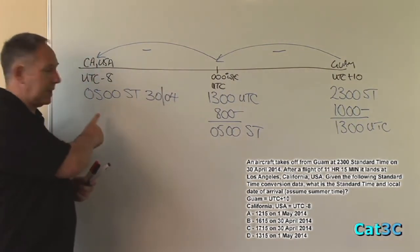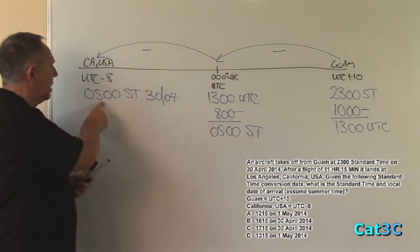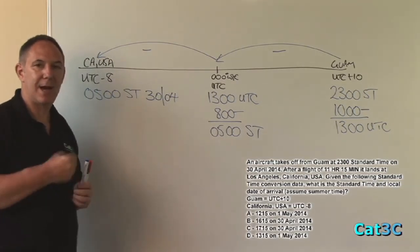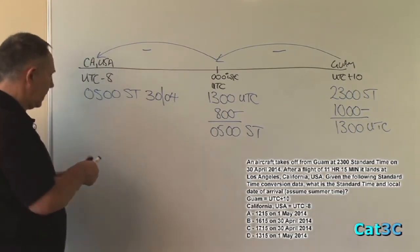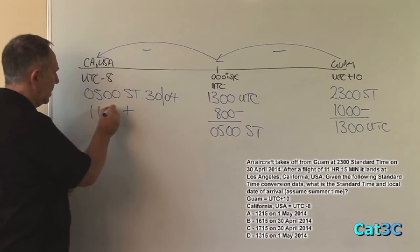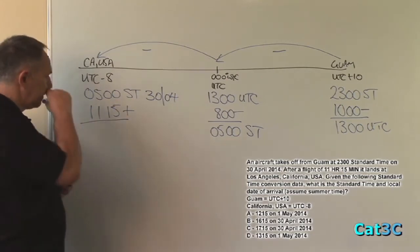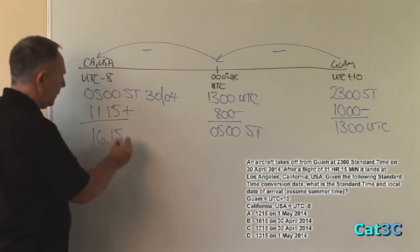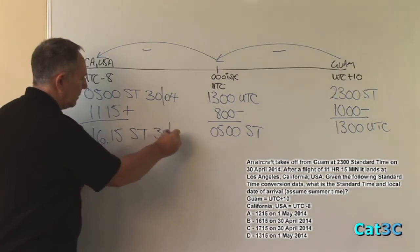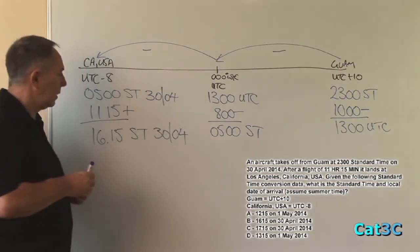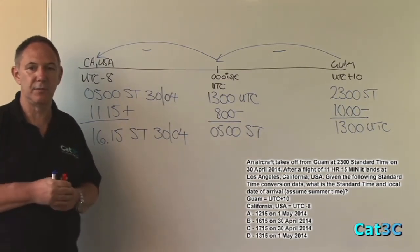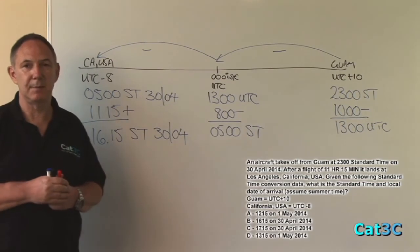However, what we must note is that this is the standard time at California, USA, when the aircraft took off from Guam. What we now have to do is to add on the flight time. The flight time is 11 hours and 15 minutes, which gives me a final landing time at California of 1615 standard time on the 30th of April. Referring to the answers, you can see that option B says 1615 on the 30th of April 2014, and you may be tempted to select this answer.